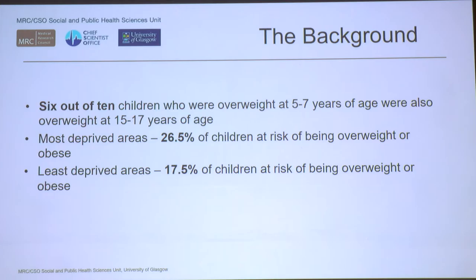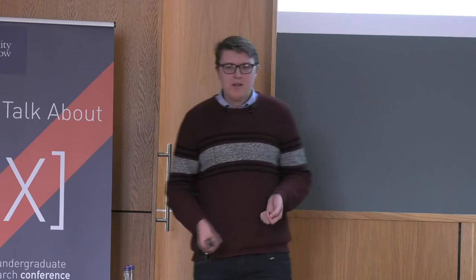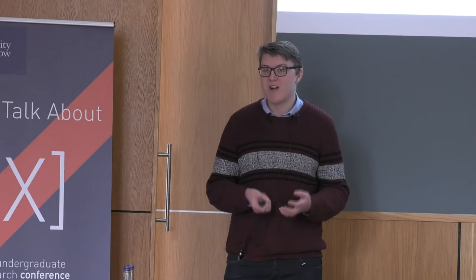First, some background. There are two main points you need to follow. The first is an idea we call obesity tracking throughout childhood. Six out of ten children who are obese at ages five to seven continue to be obese at ages fifteen to seventeen. We call this overweight or obesity tracking through childhood, and it's very worrying.